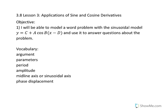Vocabulary: the argument of a function is what we're taking the cosine of — that's called the argument. The parameters we're looking at are a, b, c, and d.